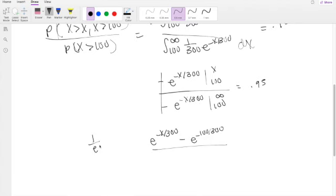Upper limit here, 1 over e to a really big number is just going to be 0. So that's 0 minus e to the negative 100 over 300, equals 0.95.